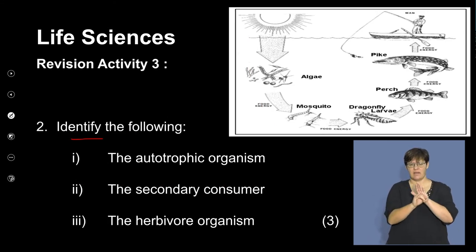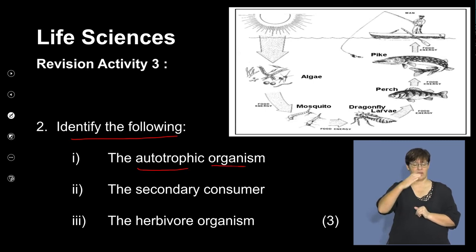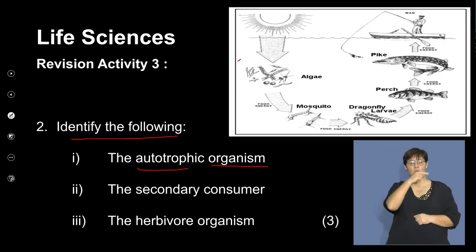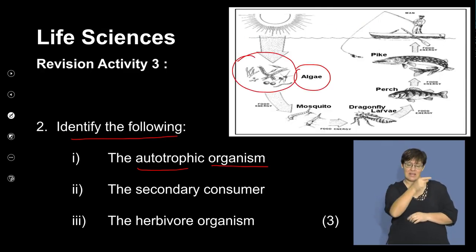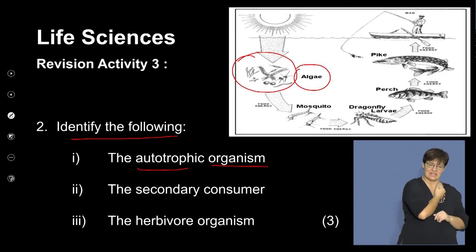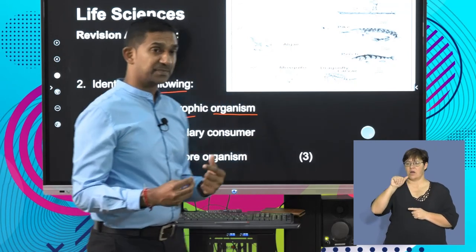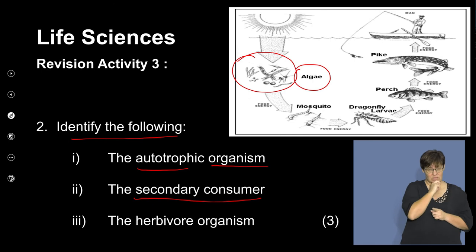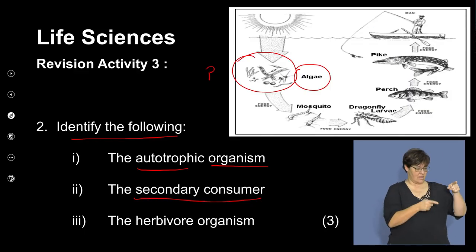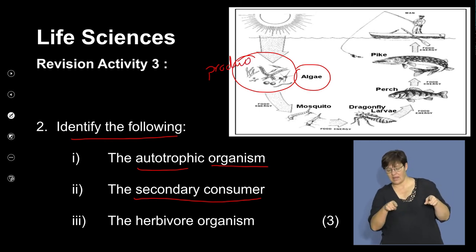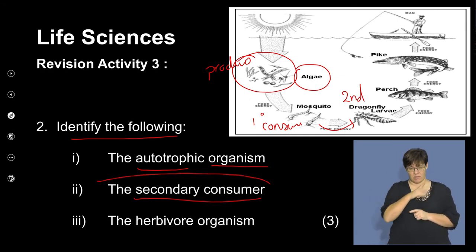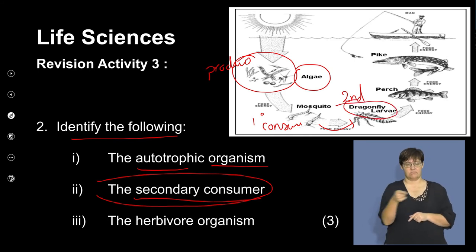Identify the autotrophic organism. Autotrophs are individuals able to produce their own food. In an aquatic ecosystem, we have algae that can photosynthesize — so algae are your autotrophic organisms. Secondary consumers: primary consumers are the first level, secondary consumers are the next. Labeling this food chain: algae are your producers, mosquito larvae are your primary consumers, and dragonfly larvae would be your secondary consumers. The herbivore organism: herbivores feed off plant material. In this example, mosquitoes feed off the algae — so we regard mosquitoes as your herbivores.